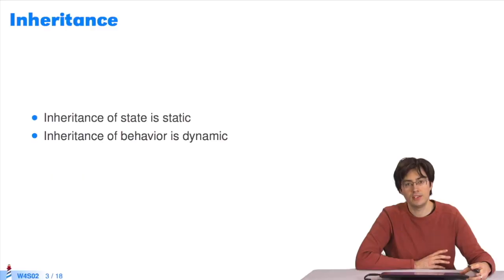As we saw in sequence 1, inheritance is static for state. That is, when the subclass is defined, its state is known. But inheritance of behavior is dynamic when the program is running. When you send a message to an object, you look for methods for class and superclass.